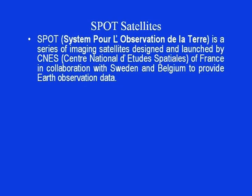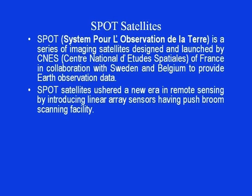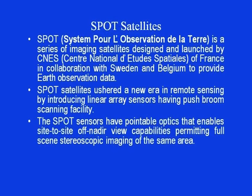The next satellite system is SPOT, launched by France. SPOT is the acronym for Système Pour l'Observation de la Terre, a series of imaging satellites designed and launched by CNES (Centre National d'Études Spatiales) of France in collaboration with Sweden and Belgium to provide earth observation data. SPOT ushered a new era in remote sensing by introducing linear array sensors with push-broom scanning. SPOT sensors have pointable optics enabling side-to-side off-nadir viewing, permitting full-scene stereoscopic imaging of the same area from two different orbital paths.